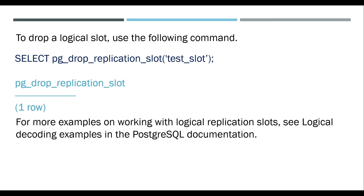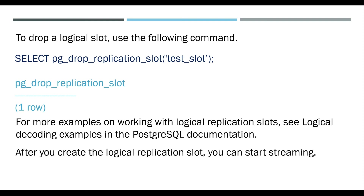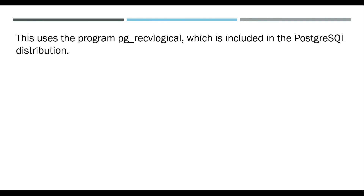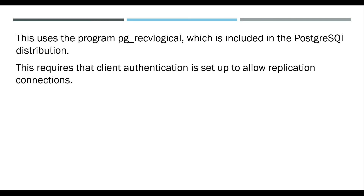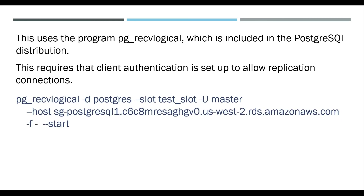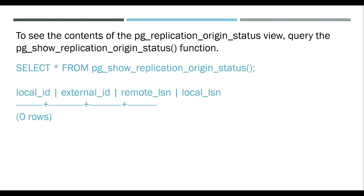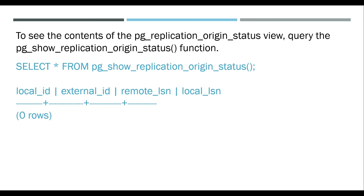For more examples on working with logical replication slots, see logical decoding examples in the PostgreSQL documentation. After you create the logical replication slot, you can start streaming. The following example shows how logical decoding is controlled over the streaming replication protocol using the program pg_recv_logical, which is included in the PostgreSQL distribution. This requires that client authentication is set up to allow replication connections. To see the contents of the pg_replication_origin_status view, query the pg_show_replication_origin_status function: SELECT * FROM pg_show_replication_origin_status.